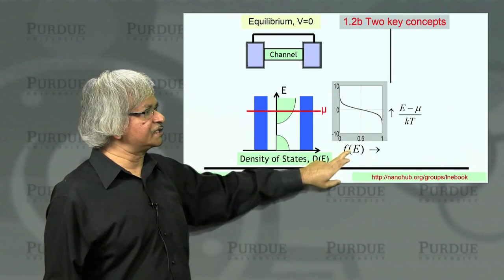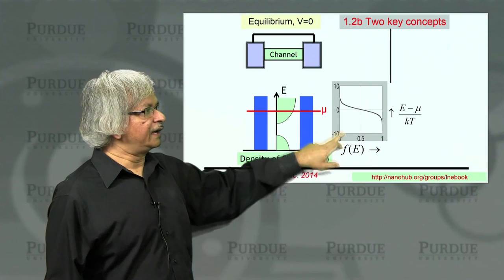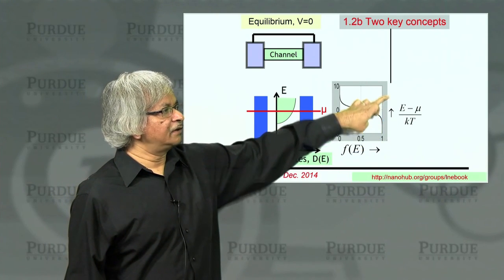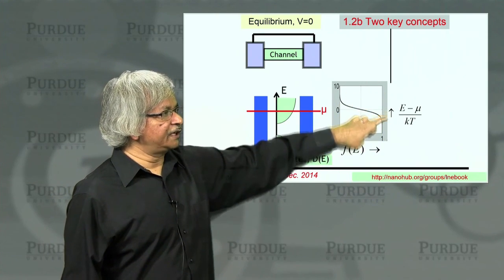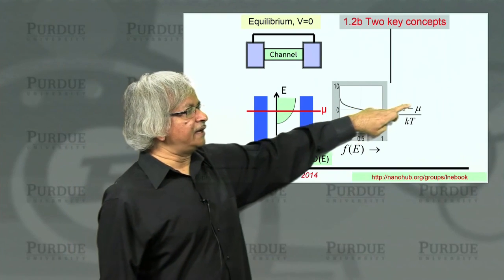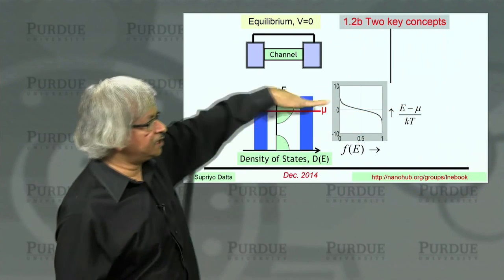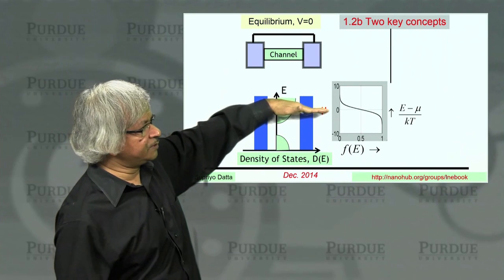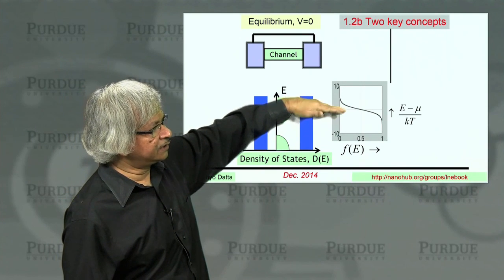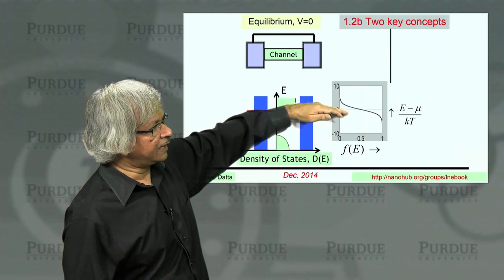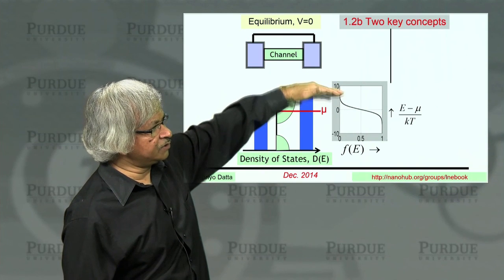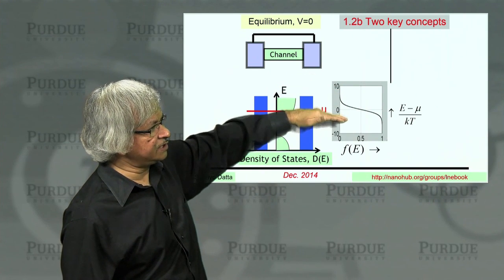And the distribution at equilibrium will be given by something called this Fermi function. So what I've plotted here is this Fermi function. Again, the vertical axis is E minus mu. That means it's the energy referred to mu, which means at mu this axis is zero. And then E minus mu, here E is greater than mu, here E is less than mu.